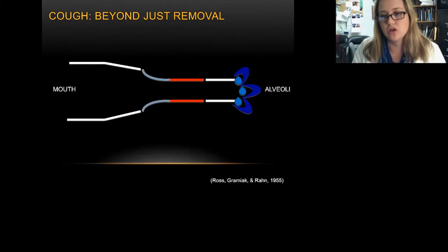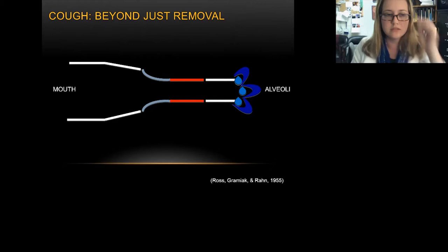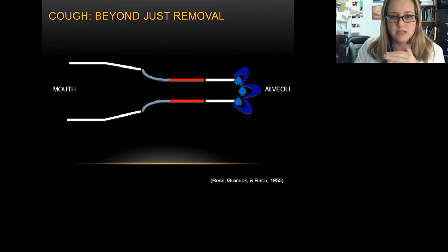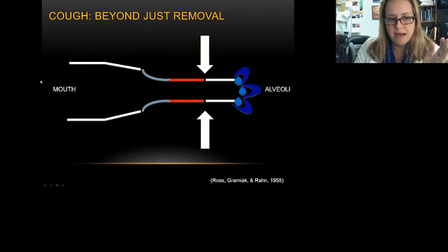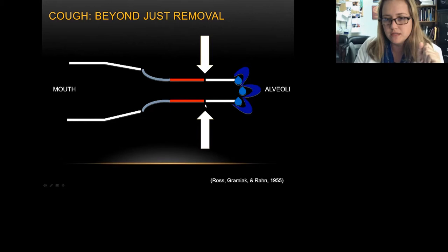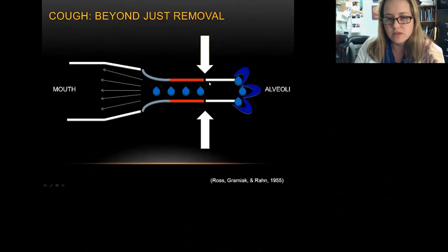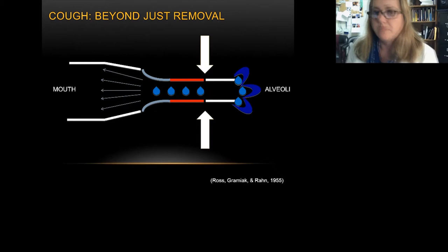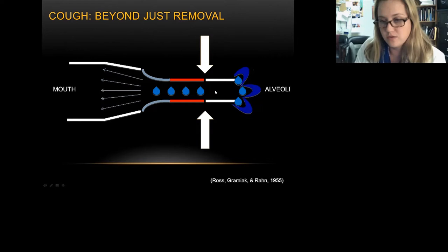In humans we have the added disadvantage of gravity. Moving from the mouth down to the alveoli, if a patient has aspirated something and there is liquid at the alveoli, as a cough is produced you have a theoretical equal pressure point. North of the equal pressure point, material will be aerosolized and removed. South of the equal pressure point, you have compression on the alveoli, and it can be removed on the next cough effort.